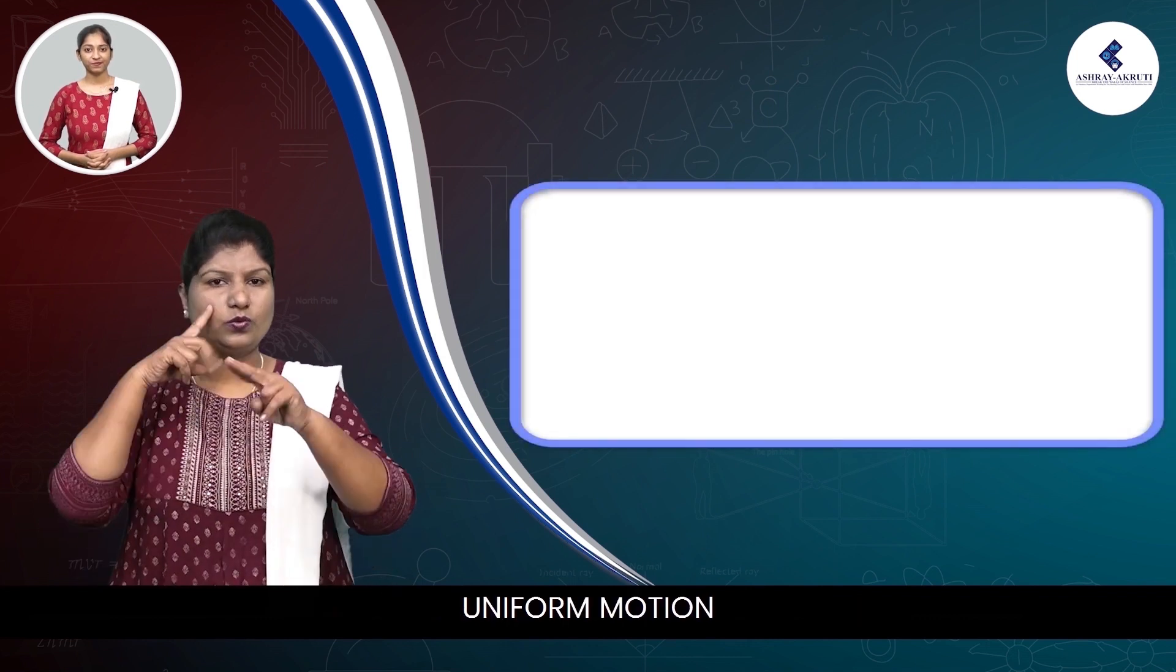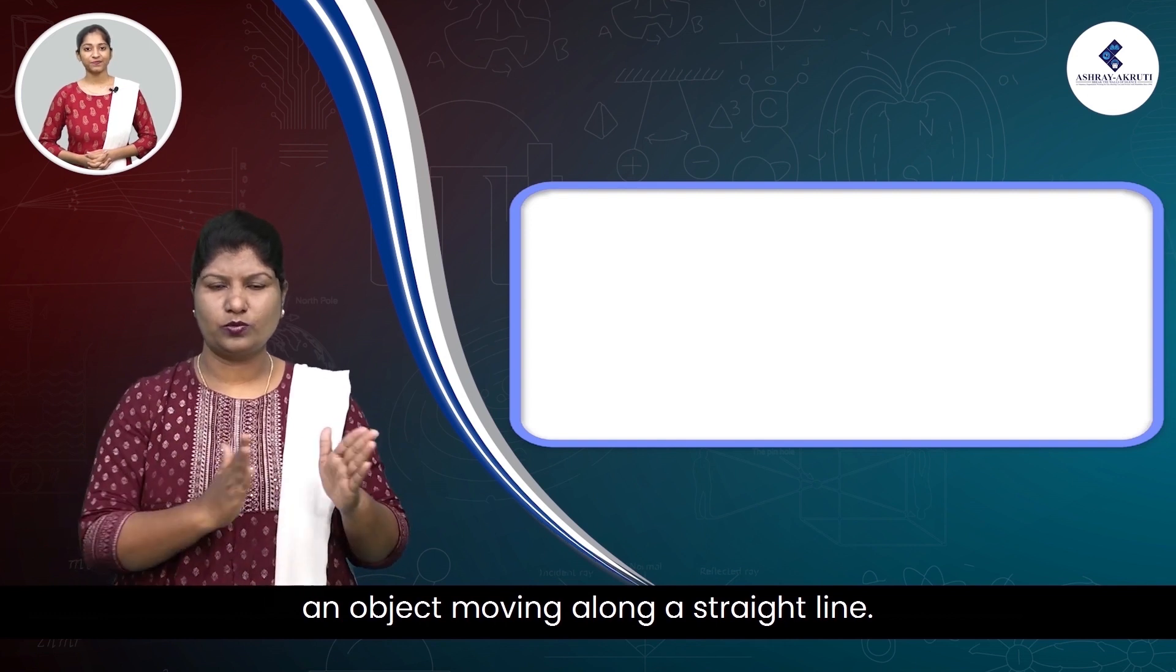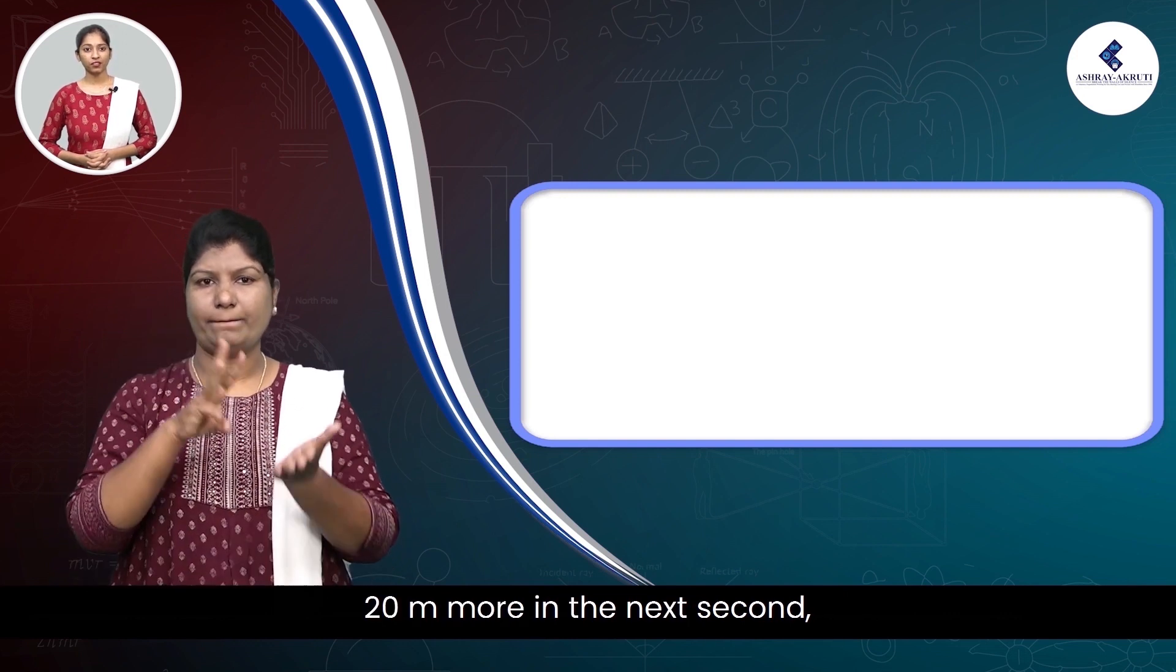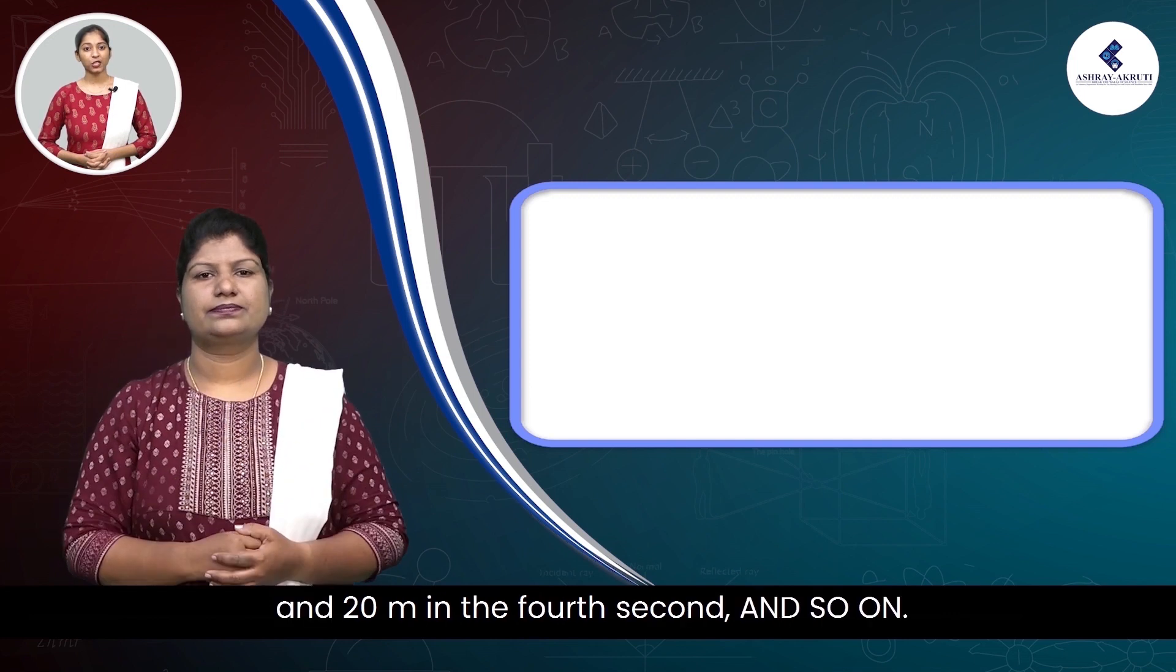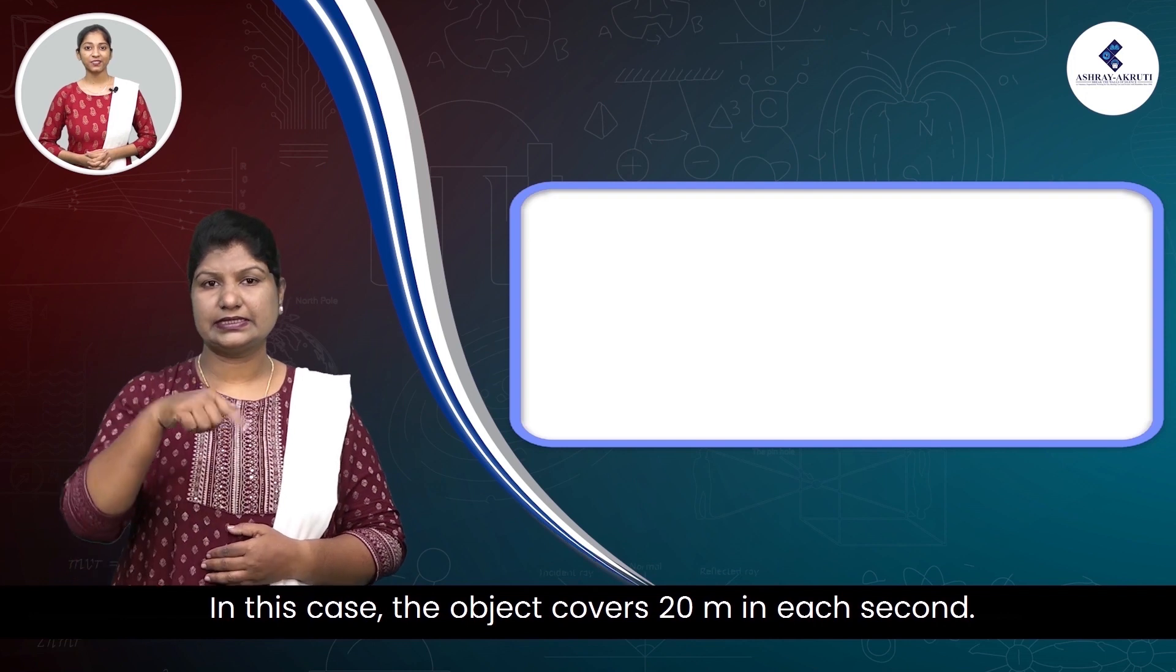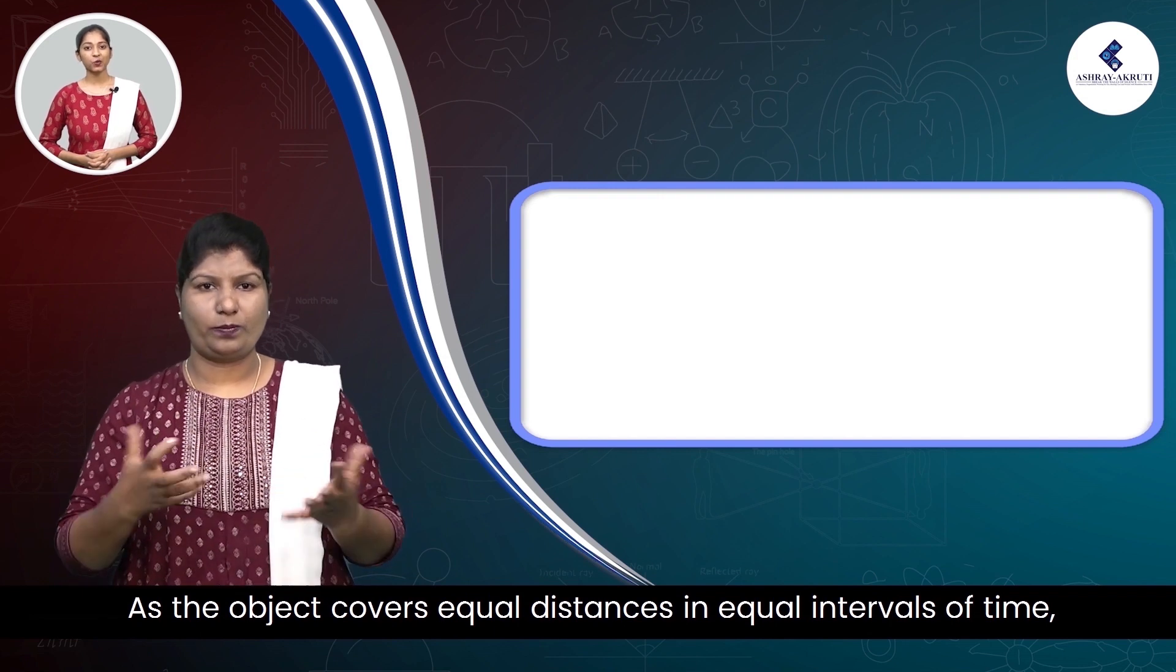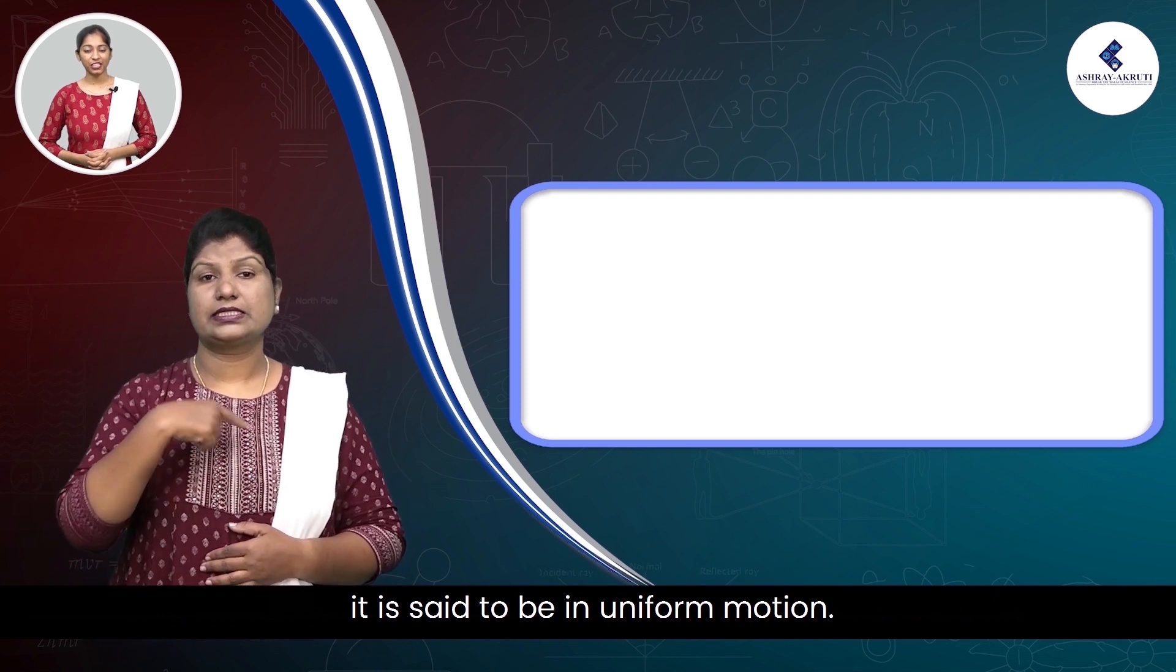Uniform motion. An object moving along a straight line. Let it travel 20 meters in the first second, 20 meters more in the next second, 20 meters in the third second, and 20 meters in the fourth second, and so on. In this case, the object covers 20 meters in each second. As the object covers equal distance in equal intervals of time, it is said to be in uniform motion.